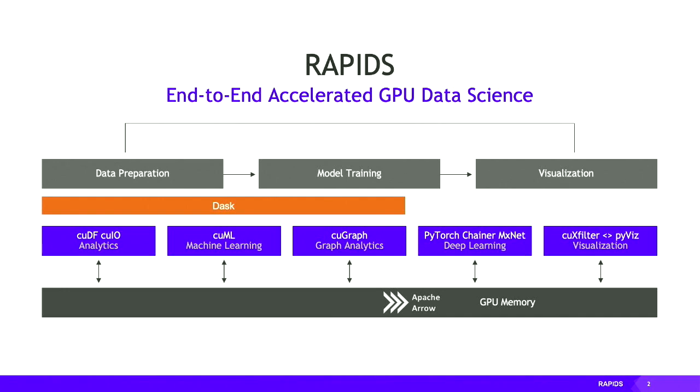The RAPIDS suite comprises a number of components, including the data frame library cuDF, which also includes a module for IO called cuIO, a machine learning library called cuML, a graph analytics library cuGraph, and a visualization component called cuCrossFilter. There's also interoperability with popular Python-based deep learning frameworks like PyTorch.